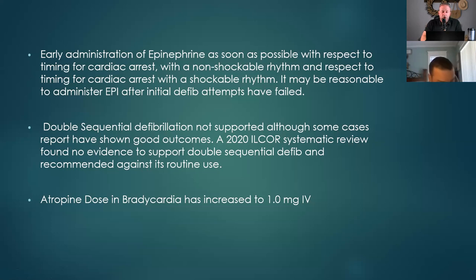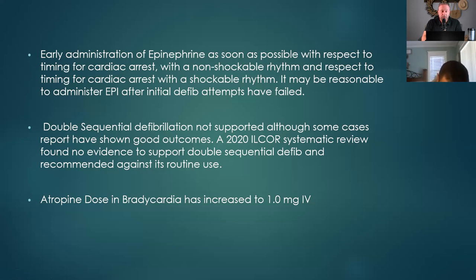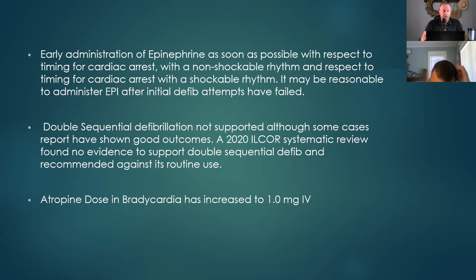Atropine — don't give it slow, give it fast. If you give anything less than 0.5 milligrams, it'll worsen the bradycardia. So if you give it slow, or if you give less than half a milligram, you'll make it worse. So whoever's drawing up your meds — before they give them, confirm: that's at least a milligram of atropine. Milligram of atropine — slam it. Don't be shy, don't give it slow.